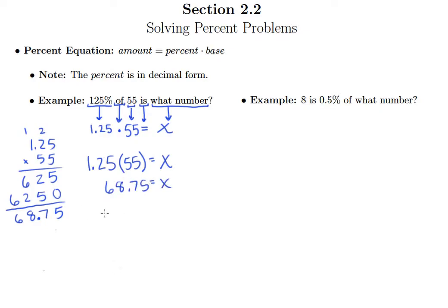And so kind of a concluding statement we can make here is that 125% of 55 is 68.75. And let's at least see if this is reasonable. 125% is greater than 100%, so it makes sense that 125% of 55 should be larger than 55. And let's apply some of these same principles to the next example.